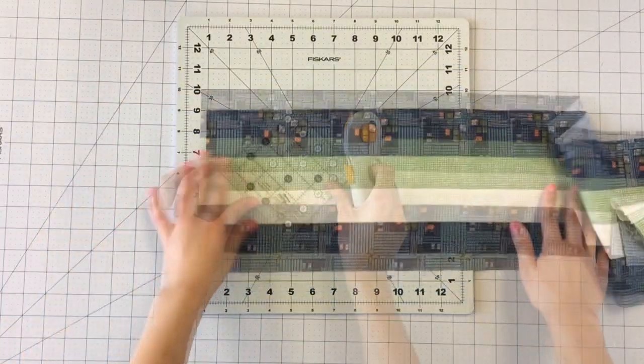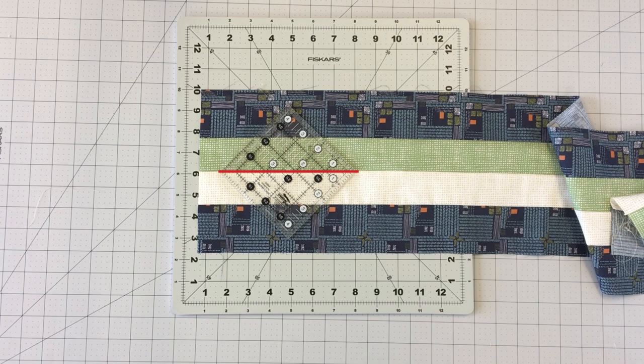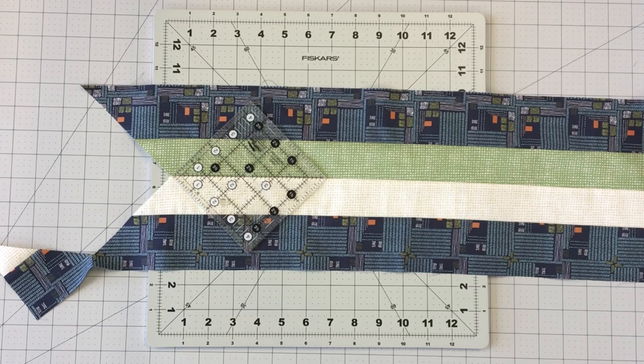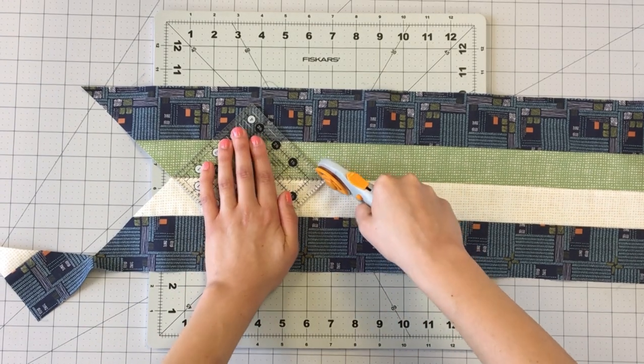Take a four and a half inch square ruler and place a 45 degree line on the center seam of your strip set. Cut out four four and a half inch squares from your strip set.